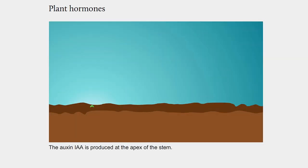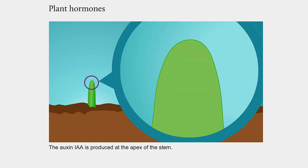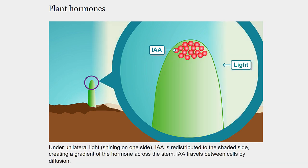The auxin IAA is produced at the apex of the stem. Under unilateral light, shining on one side, IAA is redistributed to the shaded side, creating a gradient of the hormone across the stem. IAA travels between cells by diffusion.